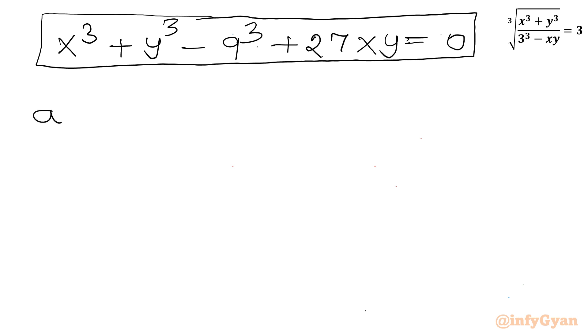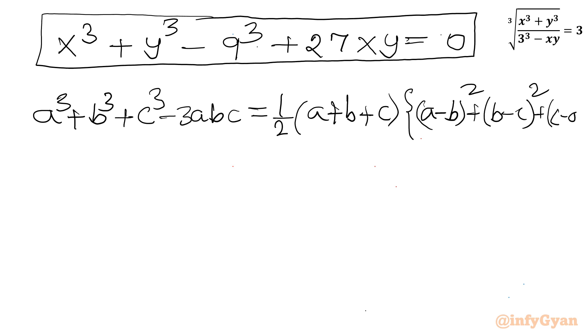Now I will be writing 1 algebraic identity A cube plus B cube plus C cube minus 3 A B C equal to half times A plus B plus C half times A whole square plus C cube minus A whole square plus C cube minus A whole square.